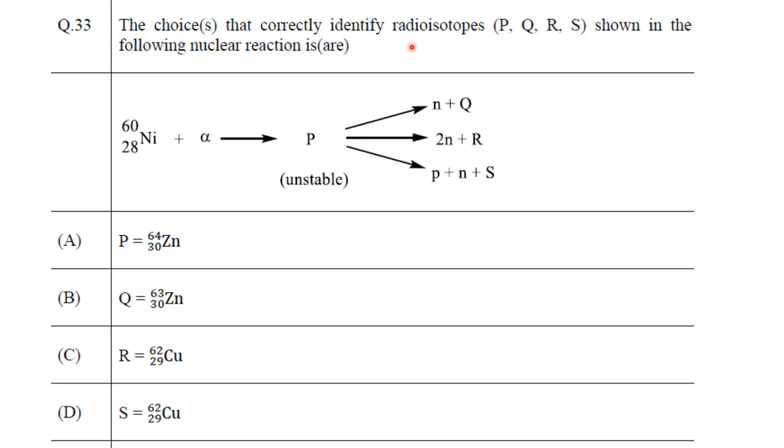The choices that correctly identify radioisotopes P, Q, R, S shown in the following nuclear reaction. In this particular question, we see there is a choice of four different isotopes for the four different entities that are formed, and we are asked to find out which among them is correct. This is a multiple correct question, so you will get more than one correct as the answer.